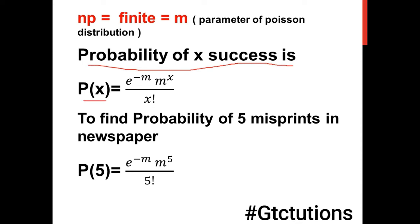The poison probability function is: P(x) = e raised to power minus m, into m raised to power x, divided by x factorial. Here m is the parameter of the poison distribution, which we call the mean. m equals n into p, which is a finite value because p approaches 0 and n approaches infinity — their product is finite and equals m. There is only one parameter in this distribution.